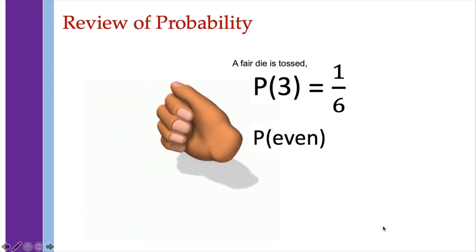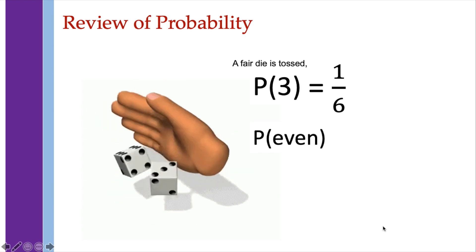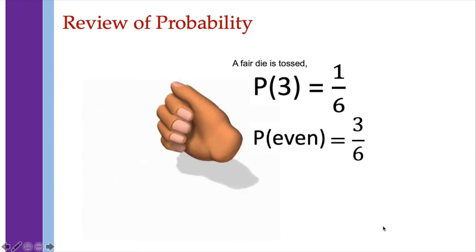And the probability of getting an even outcome, so the possible outcomes are 2, 4, and 6. We have 3 outcomes out of the 6 total possible outcomes.